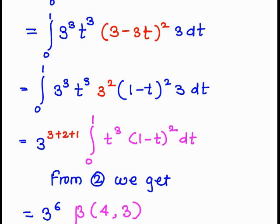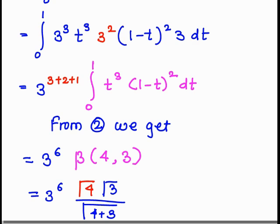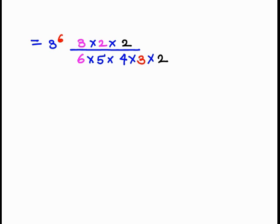Beta(4, 3) equals gamma(4) times gamma(3) divided by gamma(4 plus 3). Gamma(4) is 3 factorial, gamma(3) is 2 factorial, and gamma(7) is 6 factorial, which is 6 times 5 times 4 times 3 times 2. After cancellation, the 3 and 2 from the numerator cancel with terms in the denominator, leaving 3 raised to 5 upon 20.